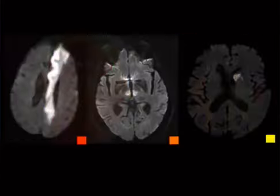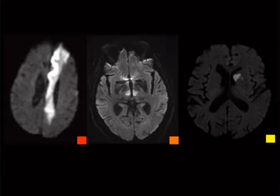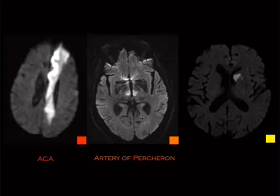Three cases showing infarcts in different distributions. First: ACA infarct — a classic. Second: bilateral thalamus, paramedian thalamus location — that is the artery of Percheron infarct. Third: right in the caudate head — that is the recurrent artery of Heubner. The artery of Percheron is a variant anatomy where a single vessel gives off bilateral thalamic perforators, creating a very characteristic bilateral paramedian thalamic infarct appearance. If lucky, they'll show you the V appearance of the midbrain.